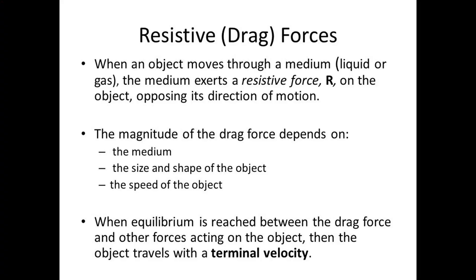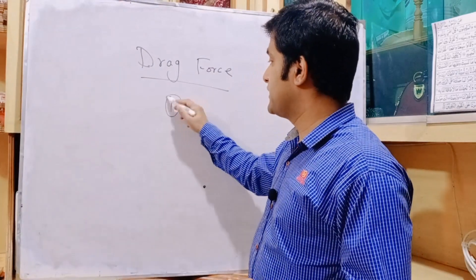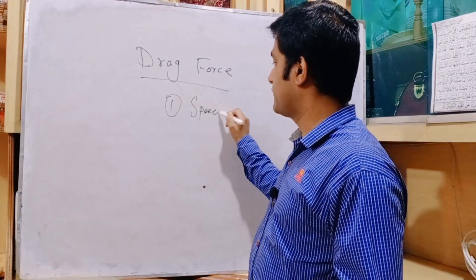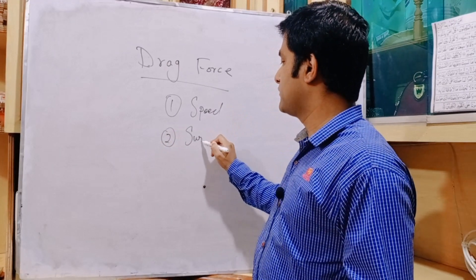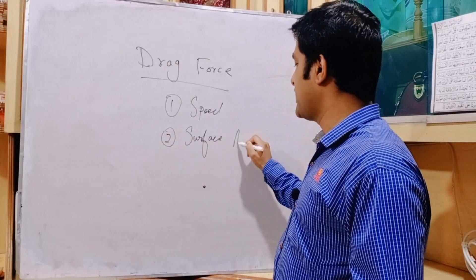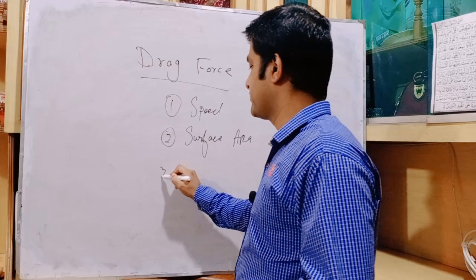Remember, drag force depends on three factors. First, drag force increases if the speed of the object increases. Second, if the size increases — surface area increases — drag force also increases. Third, drag force depends on the density of the medium; if density of the medium increases, drag force increases. So the three factors are: speed of the object, surface area, and density of the medium.